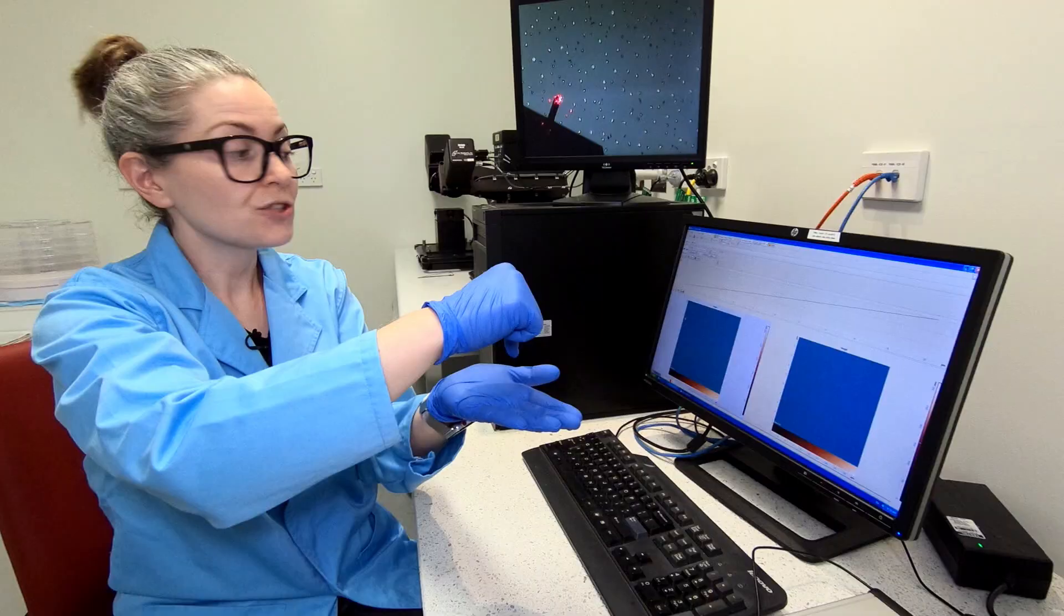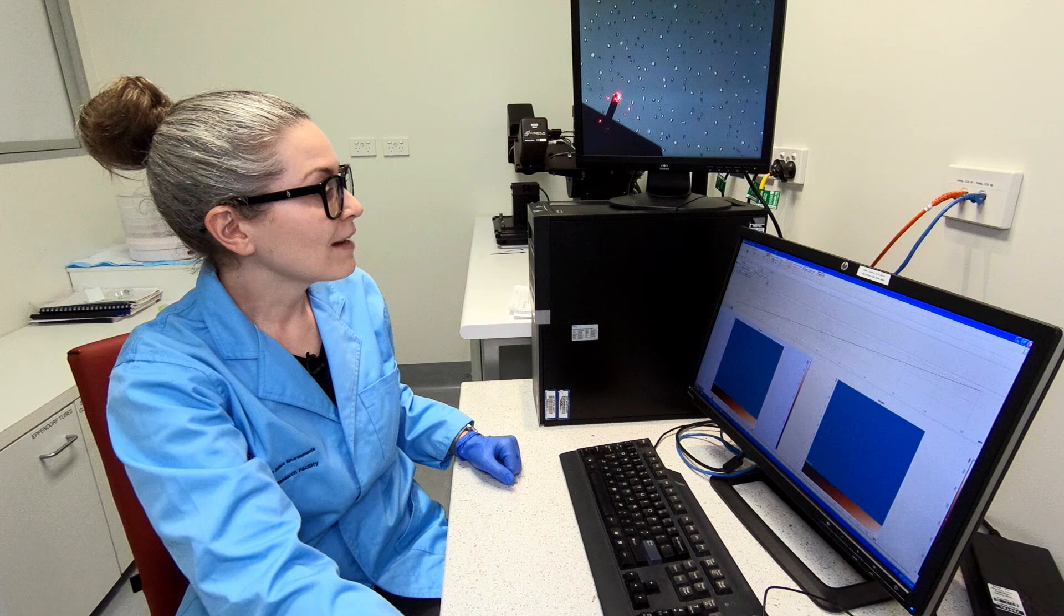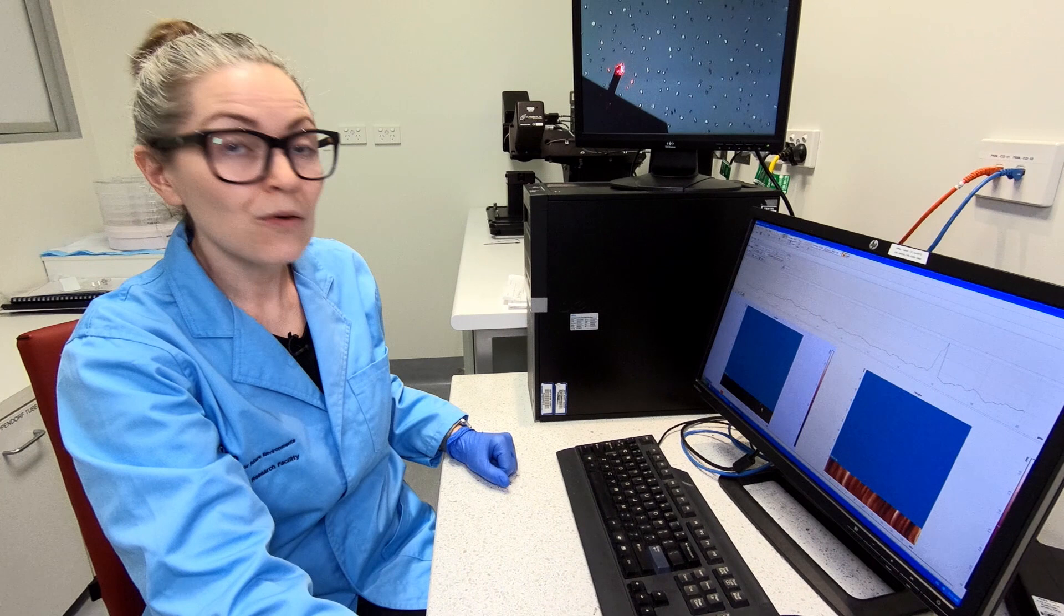It doesn't look like much on the monitor to begin with. That's because we have a slope on the sample. We'll do a little bit of slope correction, and now we see the topography of the surface showing up on our screen.